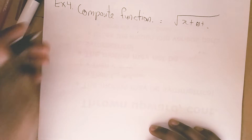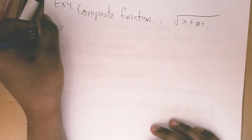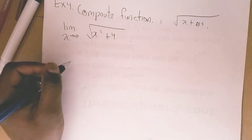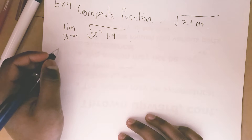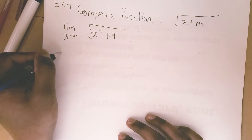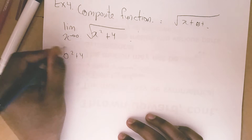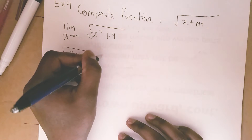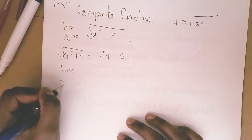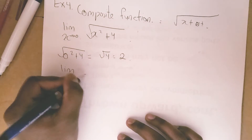Composite functions. Find the limit as x approaches 0 for the square root of (x squared plus 4). To find the limit, plug in 0: you get the square root of (0 squared plus 4), which is the square root of 4, equal to 2. So the limit as x approaches 0 is 2.